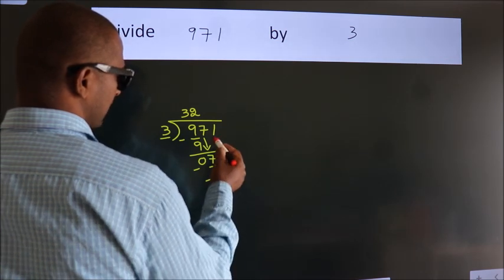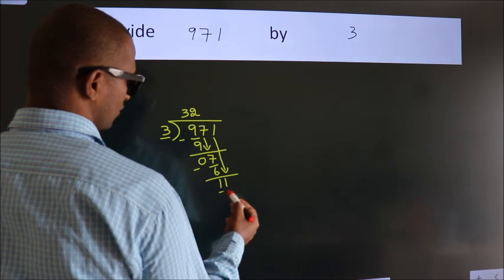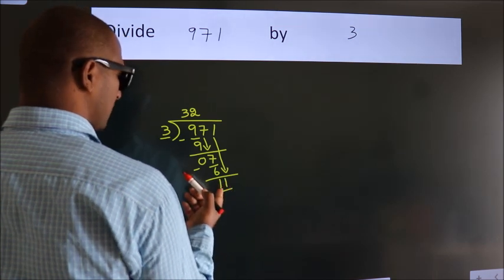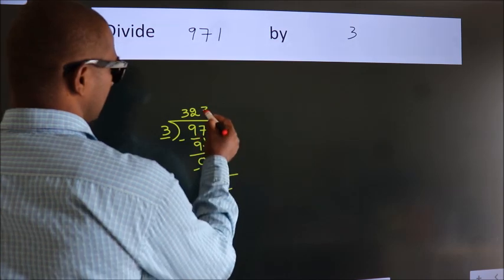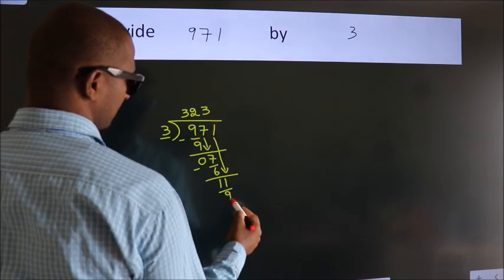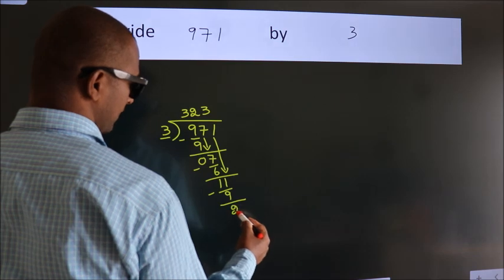After this, bring down the beside number. So 1 down, so 11. A number close to 11 in the 3 table is 3 times 3 is 9. Now we subtract. We get 2.